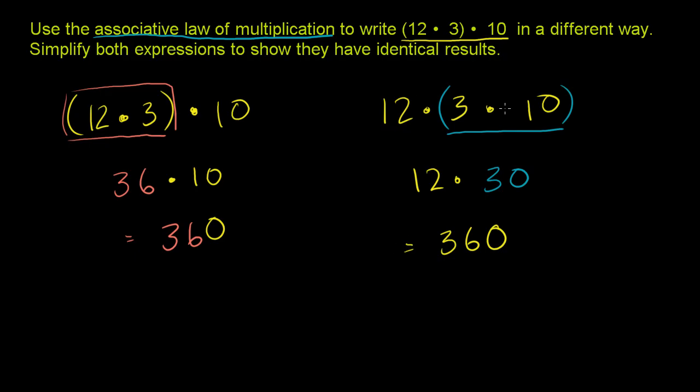So it didn't matter how we associated the multiplication. You can do the 12 times 3 first, or you could do the 3 times 10 first. Either way, they both evaluated to 360.